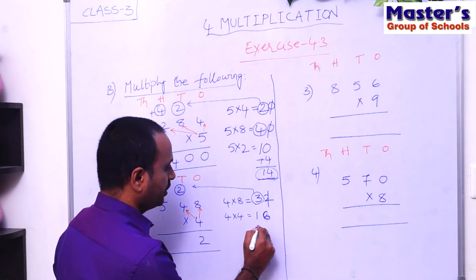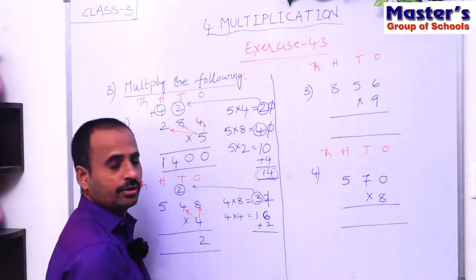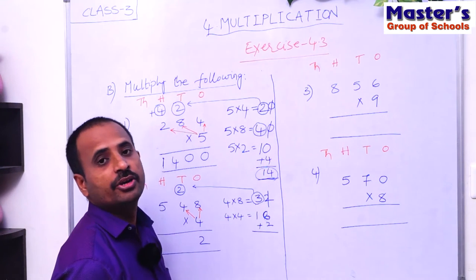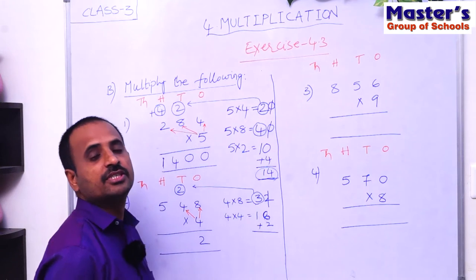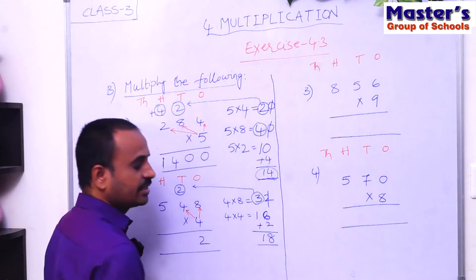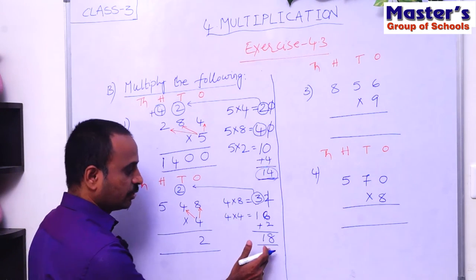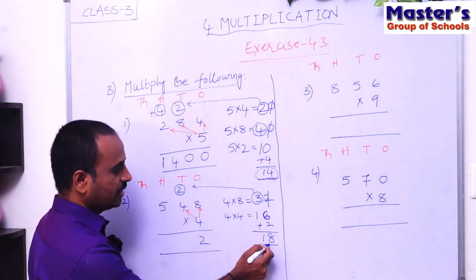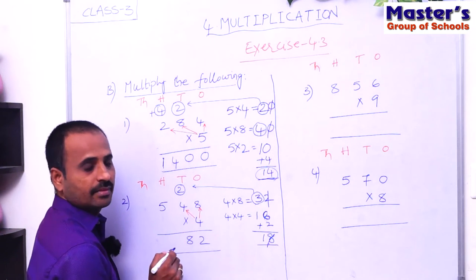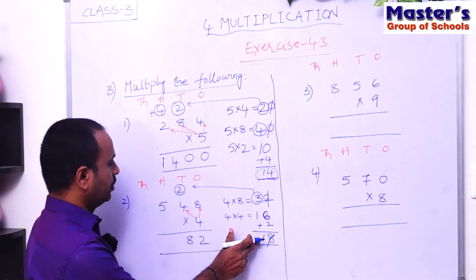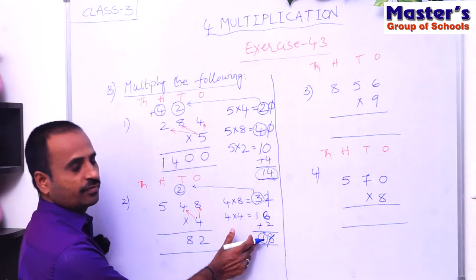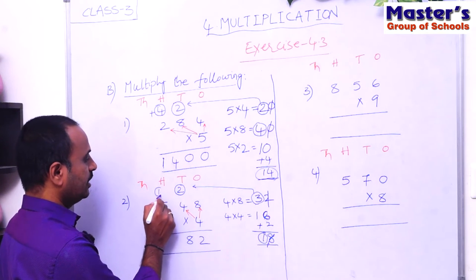Add the carried number 2 to 16: 16 + 2 = 18. And 18 is a two-digit number. Write the last digit 8 under tens place and carry the first digit 1 to the next place — the hundreds place.